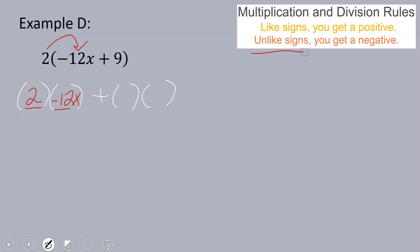Unlike signs, we have one number that is negative and one number that is positive. It gives you a negative result. So these are our multiplication rules. 2 times negative 12 is negative 24. So 2 times negative 12x is negative 24x.